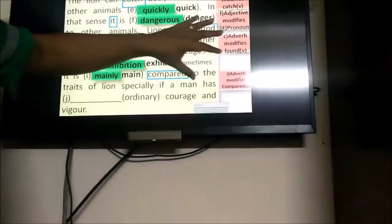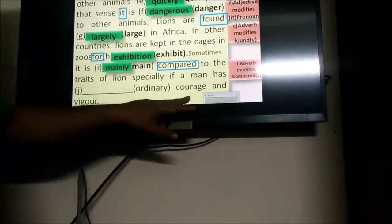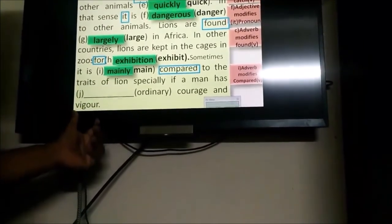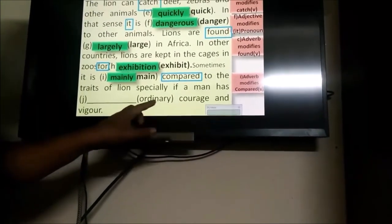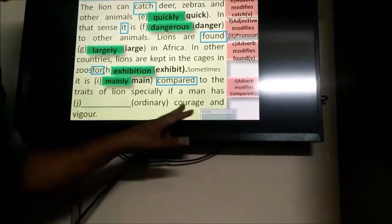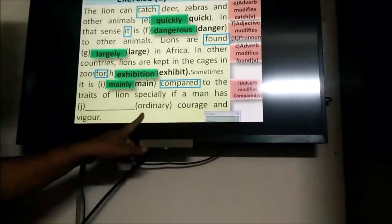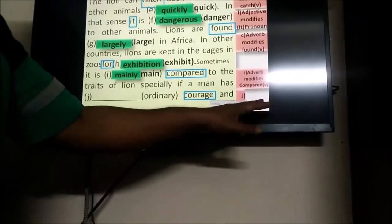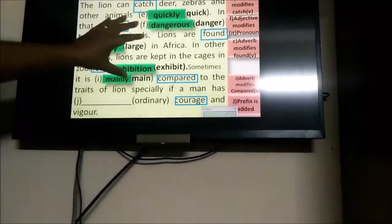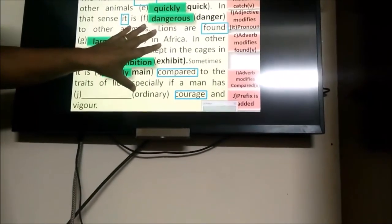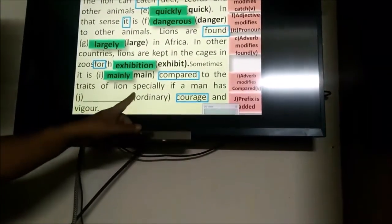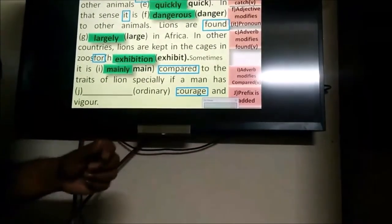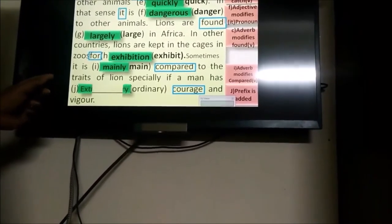Traits of lion especially if a man has ordinary courage and vigor. So, adjective plus noun. Here the prefix will be added. You can see prefix will be added. And the prefix will be extra. So, what will your answer be? Extraordinary. Let's check your answer: extraordinary.